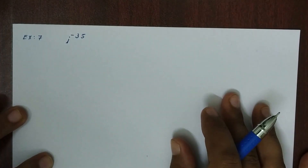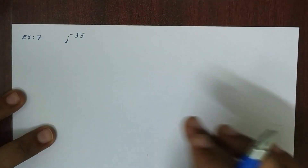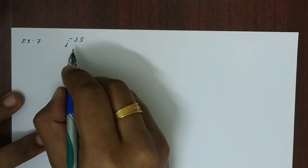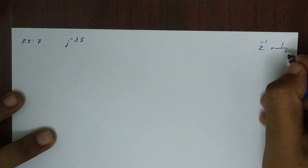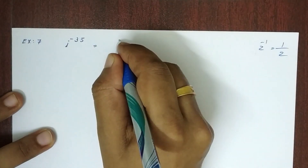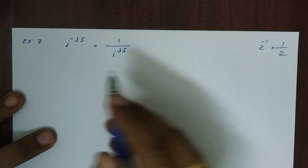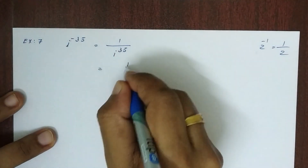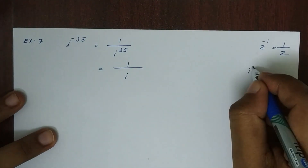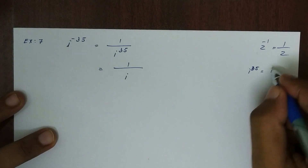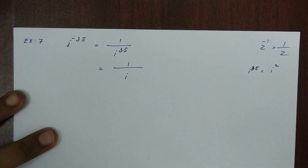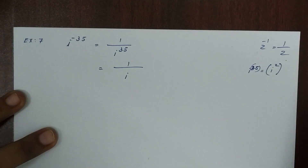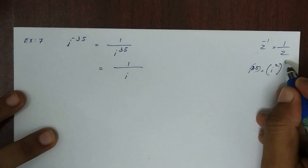Next problem: i raised to minus 35. Using the rule z raised to -1 equals 1/z, we write this as 1 divided by i raised to 35. Since 35 is an odd number, we note that 35 equals 34 plus 1. Dividing 34 by 2 we get 17, so i^35 equals (i²)^17 times i, since 2 times 17 equals 34.